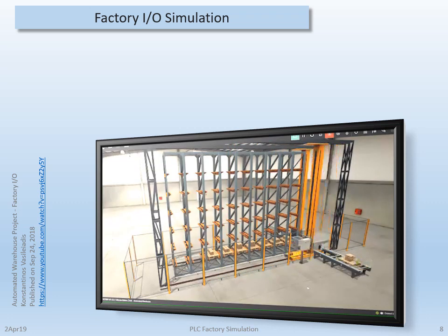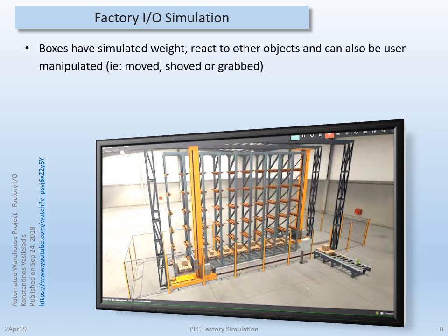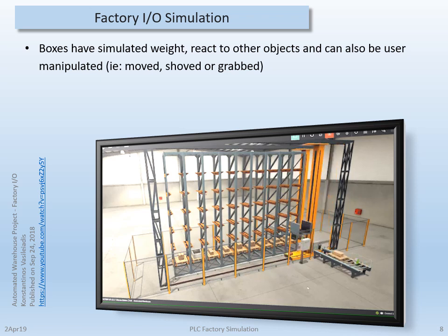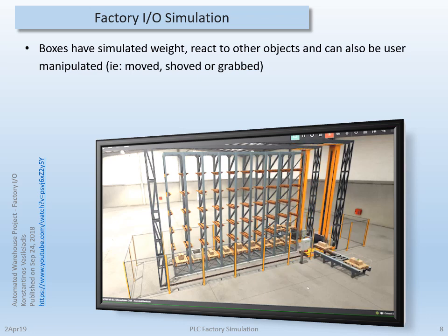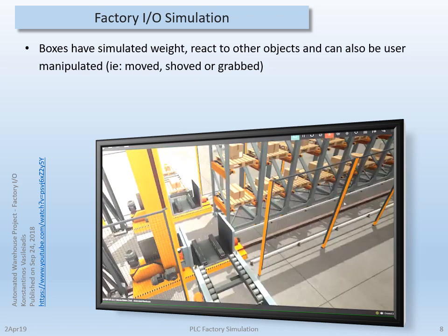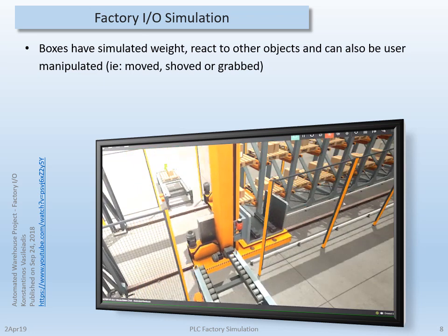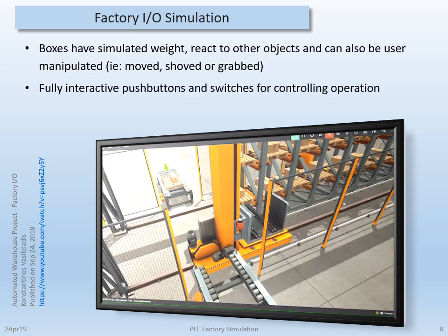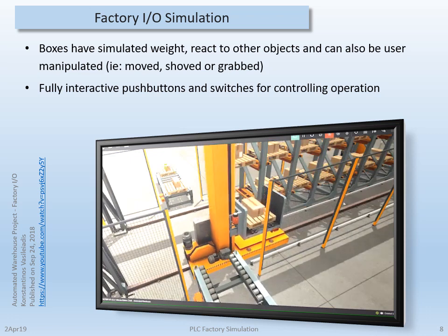Here is another video showing a warehousing operation. All the material has a simulated weight, as does the pallet and boxes. They react to other objects that can also be manipulated. For instance, if I was to load too many boxes on top of one of these pallets, the pallets would possibly slip or even turn or get caught up on the conveyor. If the boxes are piled too high, they will be knocked over by the movement or when loading into the storage position.